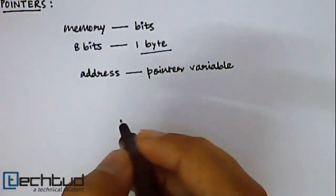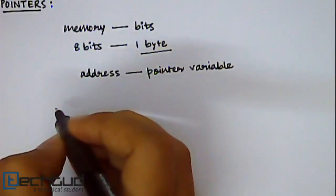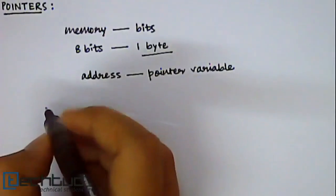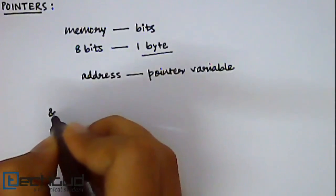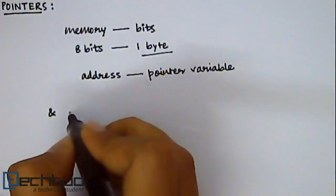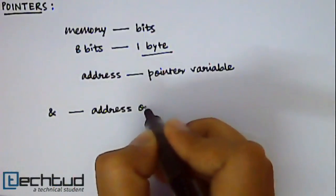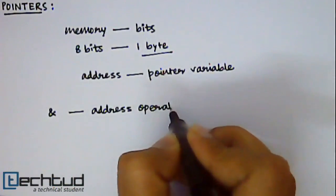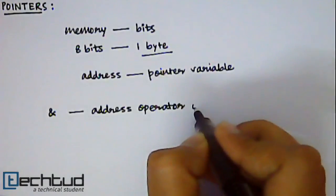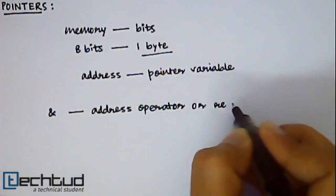So to work with pointer type variable we will need two special type of operators. First one is ampersand sign which is called address operator or reference operator.